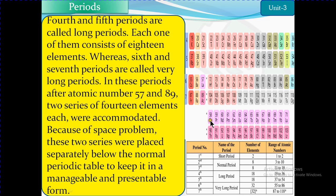Atomic number 57 is called lanthanide and 89 is actinide — one star and two stars. After 57, element 58 onward is represented by one star, and after 89, the double star represents that series. So the very long periods (6 and 7) have 32 elements each. Period 6 starts from atomic number 55 and ends at 86, while period 7 starts from 87 and ends at 118. These series were written separately below to preserve the shape of the periodic table.